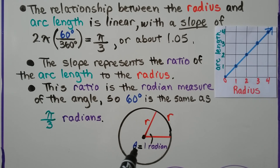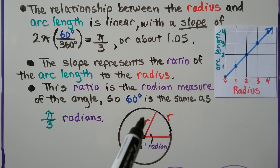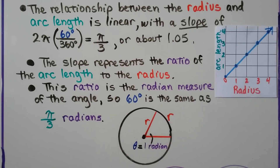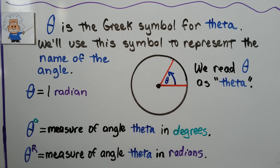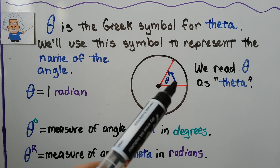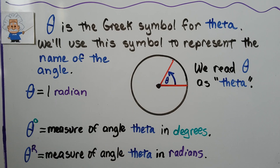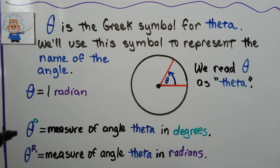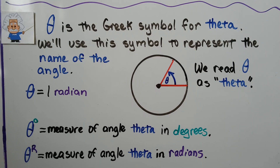See this symbol? That's theta — the Greek symbol for theta — and we'll use this symbol to represent the name of the angle. Our radius is the same as our arc length; they're both r. This is 1 radian, a 60-degree angle. If there's a little degree measure next to the theta symbol, it means the measure of angle theta in degrees. And if there's a capital R, it means the measure of angle theta in radians.